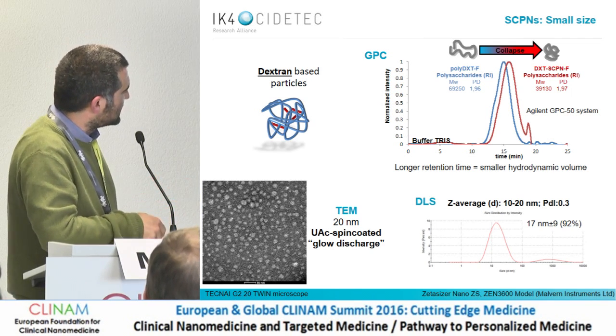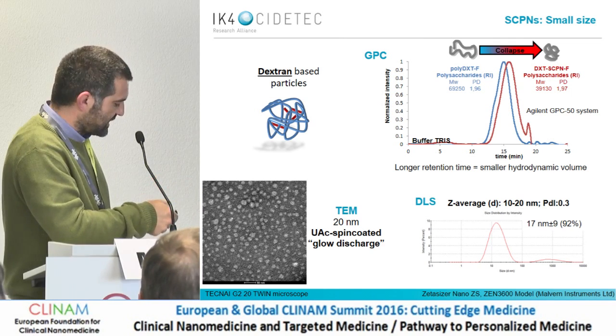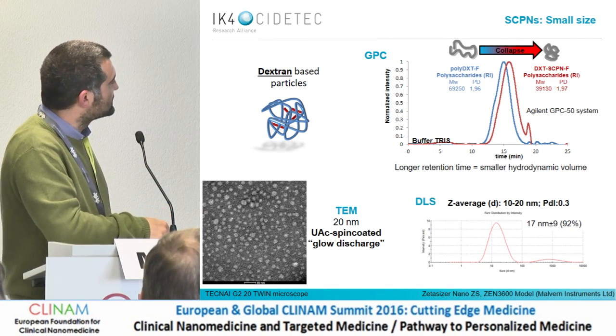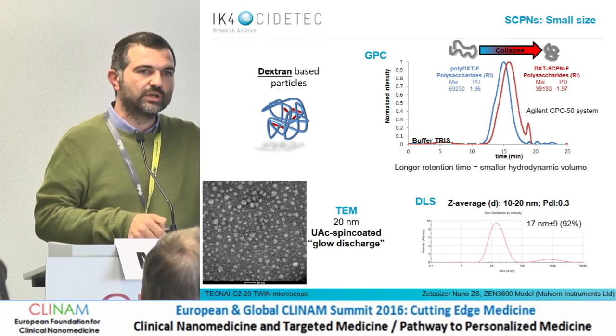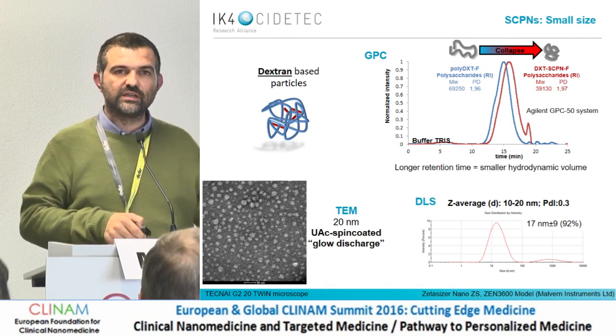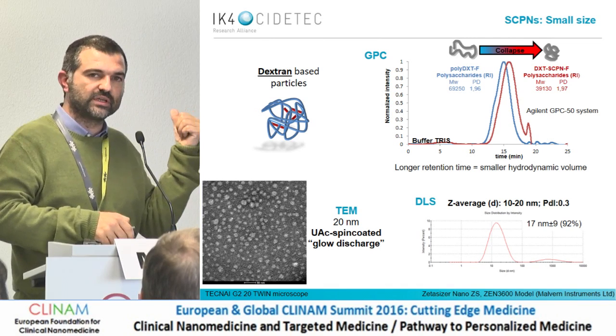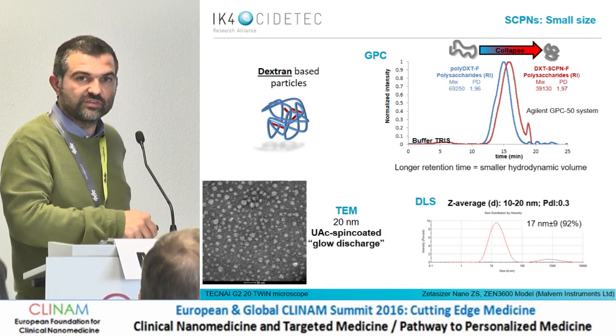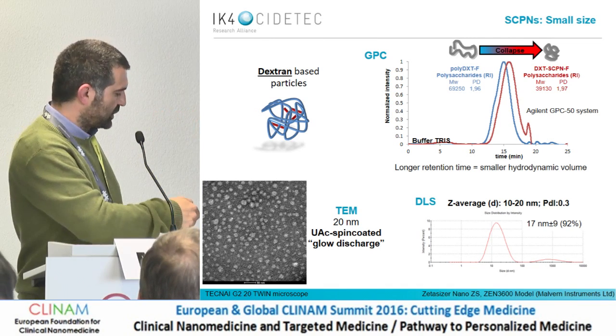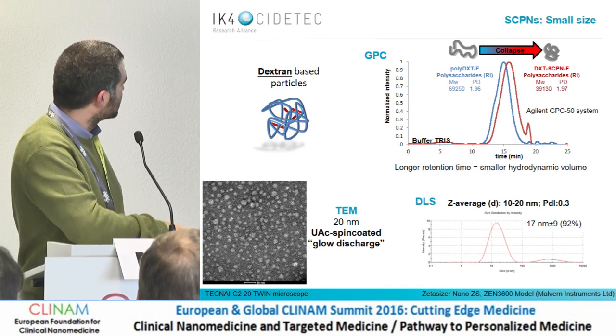The zeta average is visible. Of course the polydispersity is not low, but that is also because the polymer we use — a branched polysaccharide — itself has high polydispersity.